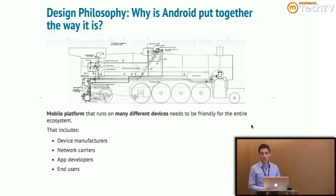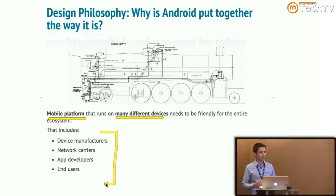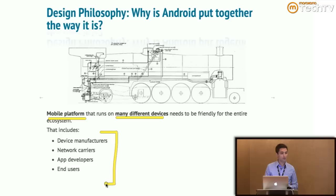Understanding this vision helps us understand a lot of different technical decisions made in Android subsequently. It has implications for the enterprise. The design philosophy was to create a mobile platform for many different devices, and while doing that they had to keep in mind the entire ecosystem: device manufacturers making the hardware, network carriers selling them, app developers providing the actual value, and end users who are going to be using those devices.